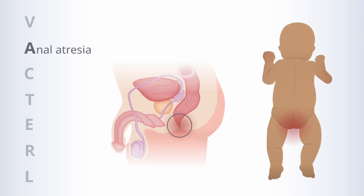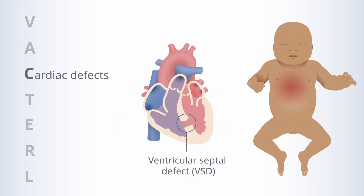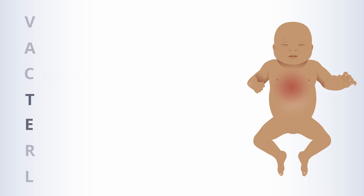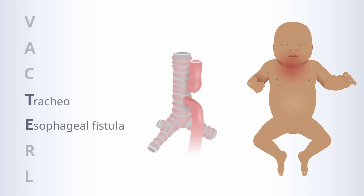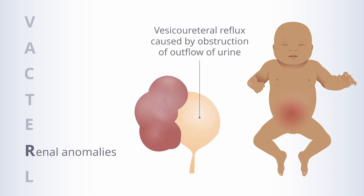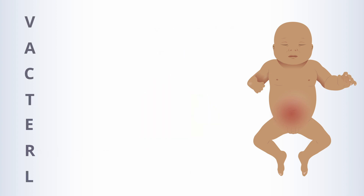A stands for anal atresia. This may be primary or it may be related to the fact that the baby is not able to swallow and passage the fluid from the amniotic sac. C represents cardiac defects, which are probably part of the underlying genetic basis of the disorder. T and E are the tracheoesophageal fistula and/or esophageal atresia. R stands for renal anomalies, which may be part of the underlying genetic disorder or because the baby is not passaging fluid in a normal way. And finally, L stands for limb abnormalities.